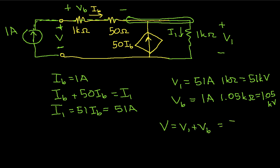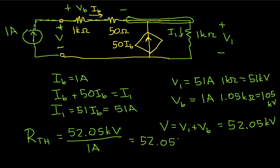And the Thevenin equivalent resistance, RTH, is going to be this 52.05 kilovolts divided by my 1 amp that I put in, which gives me 52.05 kilovolts.